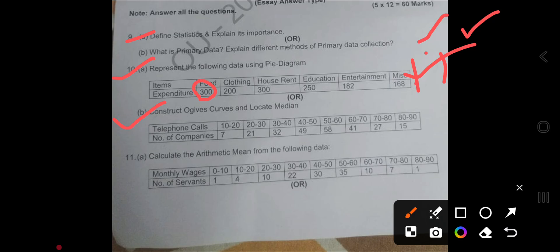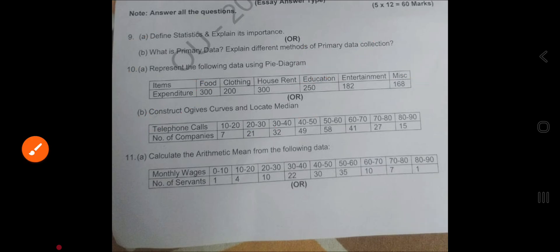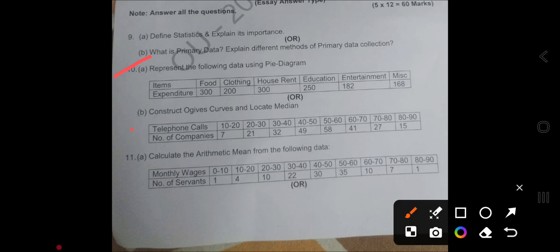How you do the percentage: amount divided by total into 360 degrees, because pi diagram is about 360 degrees. In ogive curve we do less than cumulative frequency and more than cumulative frequency. These two questions we discussed.